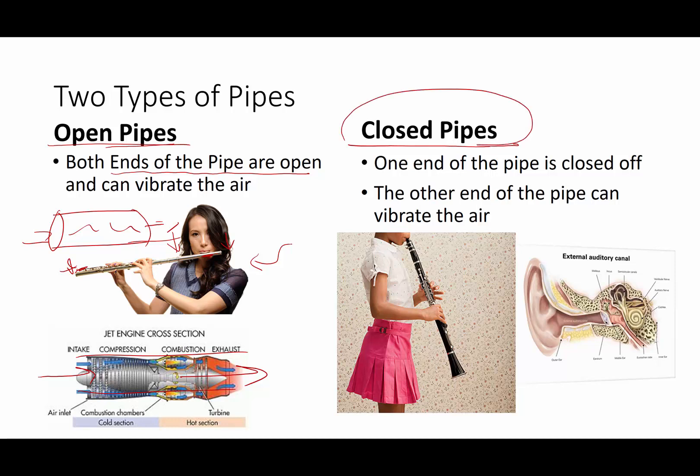Now a closed pipe is a pipe where one end is closed off. Most wind instruments are closed pipes. If you have to put your lips tight against one end of the pipe, there is no place for resonant air to escape into the room. But the other end, sound waves can come out of. So most wind instruments are going to be closed pipes and also our auditory canal is a closed pipe. This end with the eardrum is closed and then air is free to oscillate or enter through the other direction.